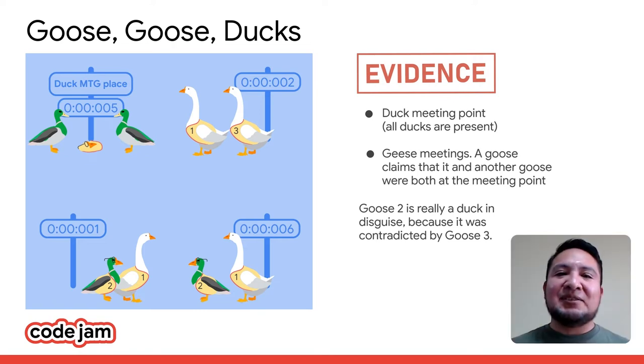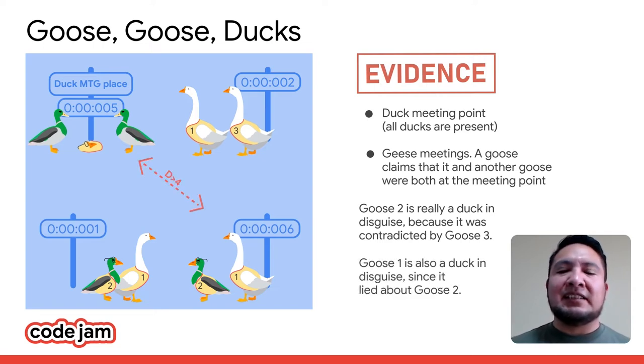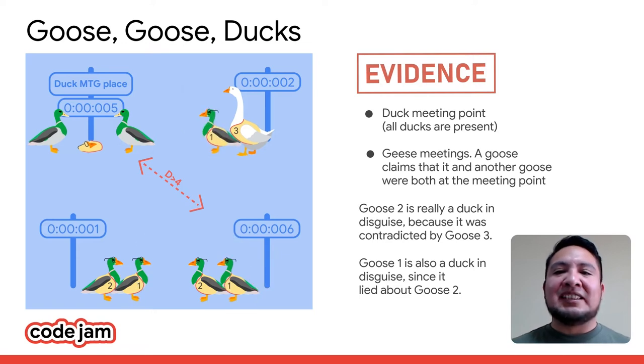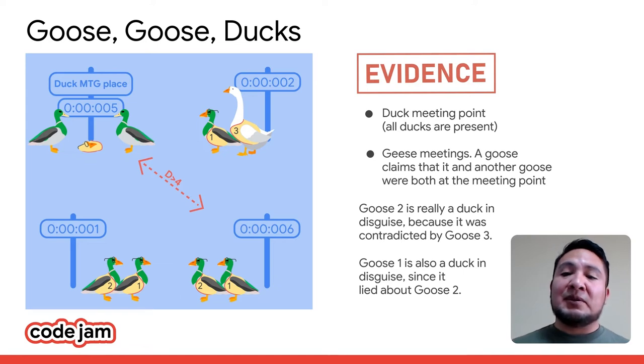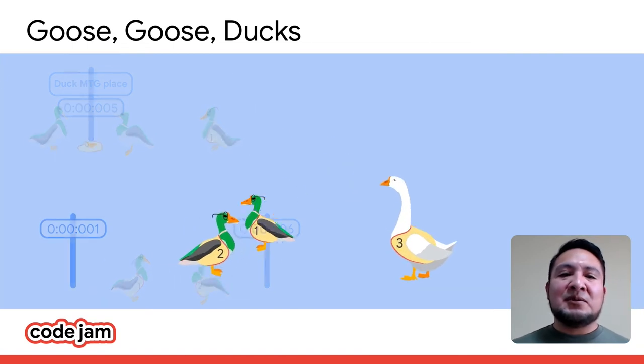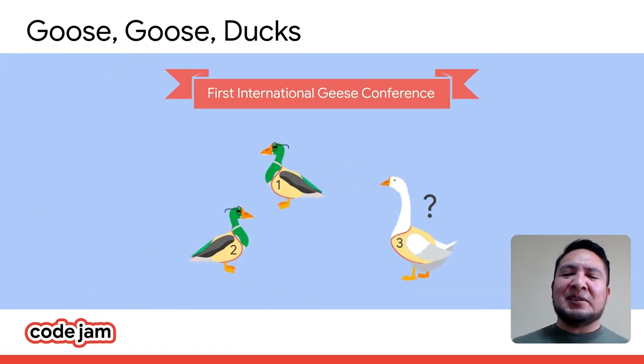And so Goose Two needed to get to the meeting place from time six. So Goose Two couldn't have been seen where Goose One claims it saw it at time five, right? So Goose One is also a duck. Right. But what about Goose Three? We don't know. It could have told the truth about Goose One. Goose Three could be a good goose or an evil duck. What should I do?